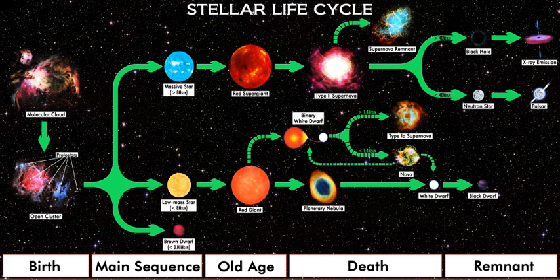Stellar evolution starts with the gravitational collapse of a giant molecular cloud. Typical giant molecular clouds are roughly 100 light-years across and contain up to 6 million solar masses. As it collapses, a giant molecular cloud breaks into smaller and smaller pieces.